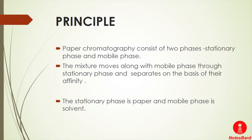In paper chromatography, the stationary phase is the paper — a cellulose sheet, also called filter paper. The mobile phase is a solvent, which can be of different types. Paper chromatography is a type of adsorption chromatography operating between solid and liquid phases, where the solid paper is the stationary phase.